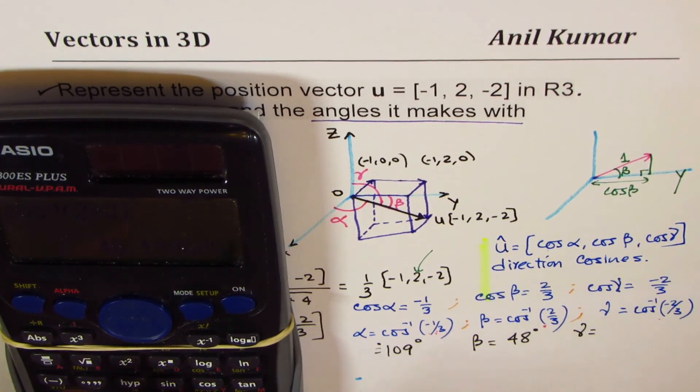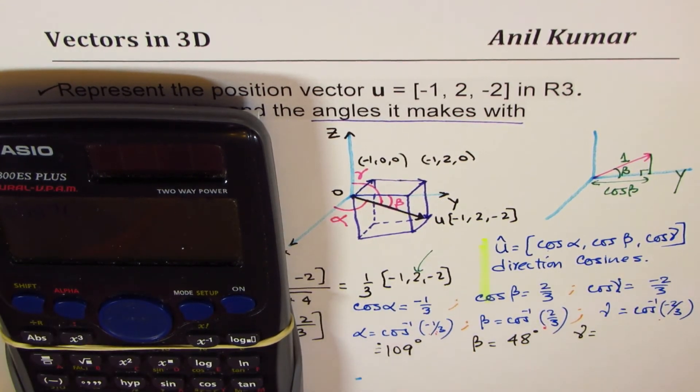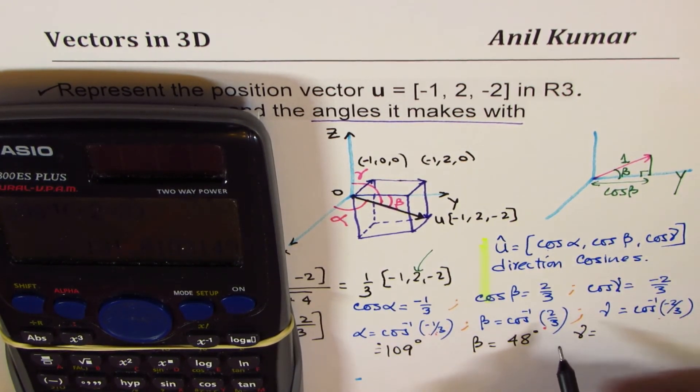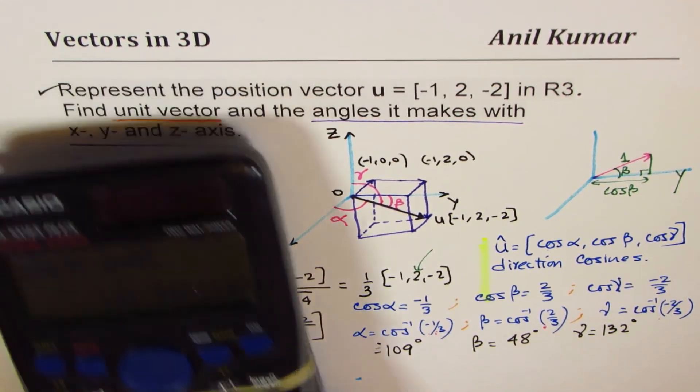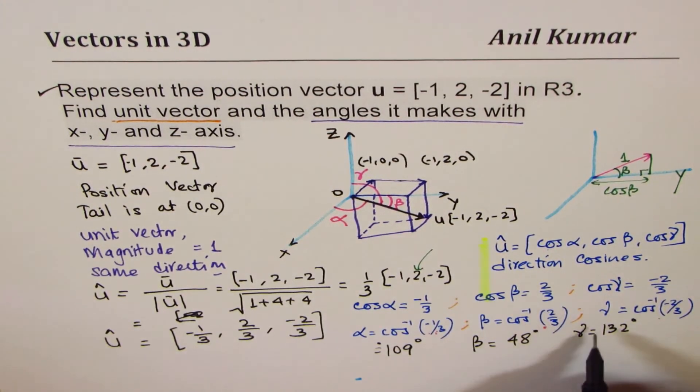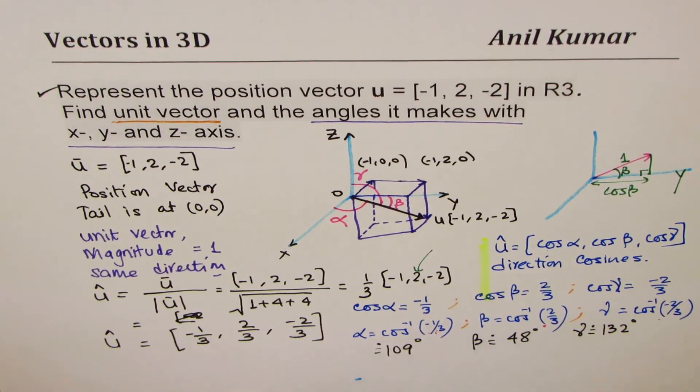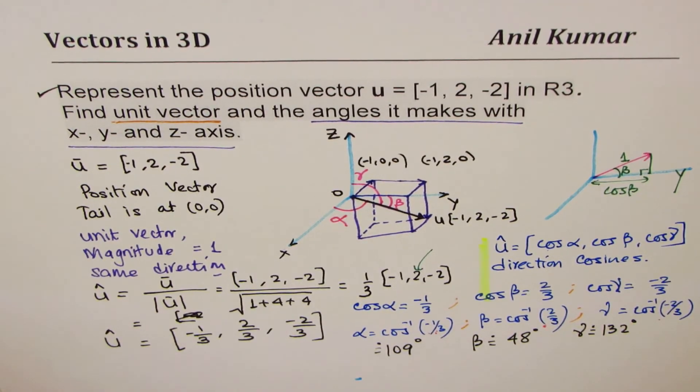And γ equals to cos inverse of -2/3, which is 131.8. So we can write this as 132 degrees. So, approximately, these are the angles which vector u will make with each axis.